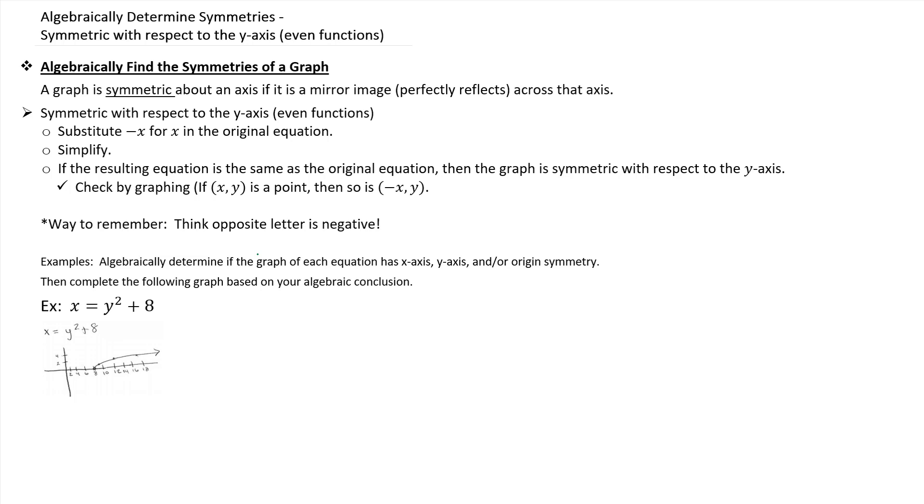What that means is that basically the graph has a mirror image across that axis. So if you were to fold the graph across that axis, the graph would fall on top of itself. It would be a perfect reflection across that axis or origin in that case.